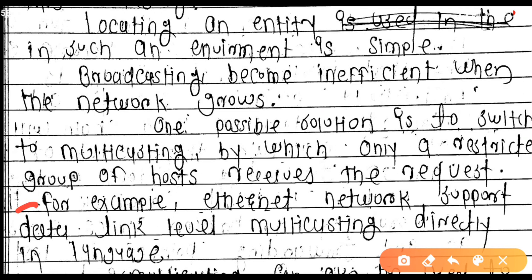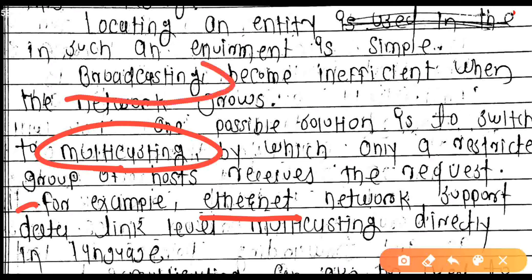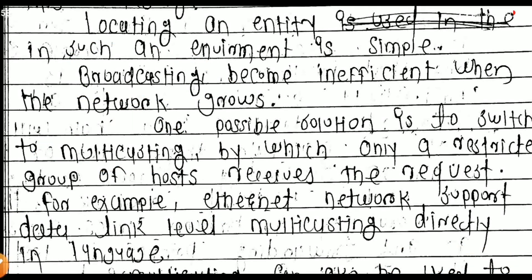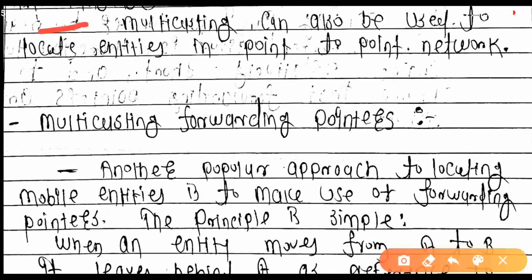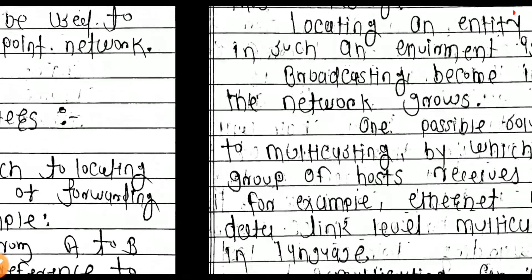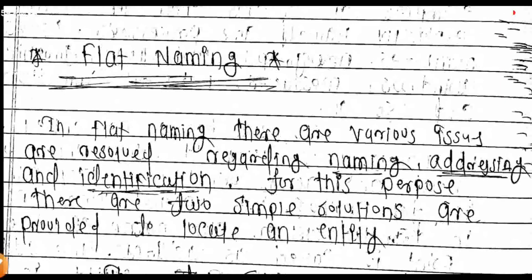These tools require support for data-link level multicasting. Ethernet is a best example of multicasting, and a local area network is an example of broadcasting. So you can see that addressing, computer locations, and identification are handled by these two techniques — broadcasting and multicasting. Multicasting can also be used to locate entities in point-to-point networks.